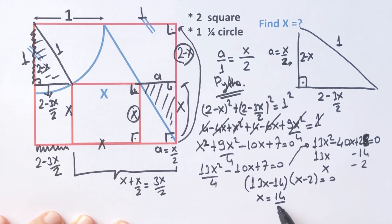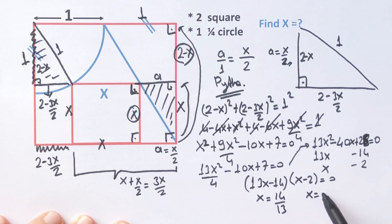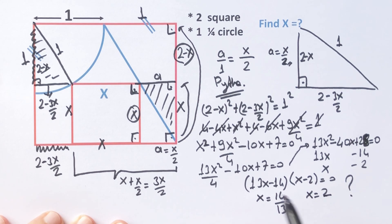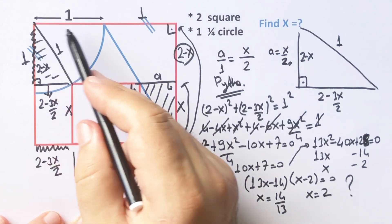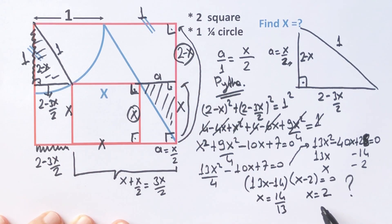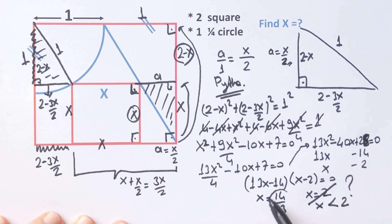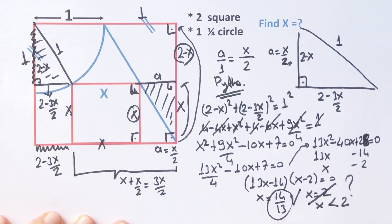So x equals 14 over 13 or x equals 2. Which one is true? We know that x must be smaller than 2, so x equals 14 over 13. Thanks for watching, and if you want more videos like this, please subscribe to my channel.